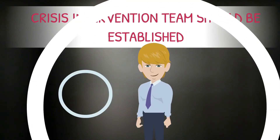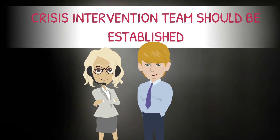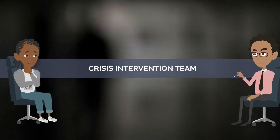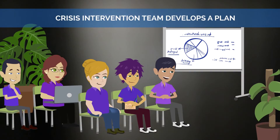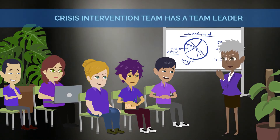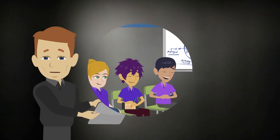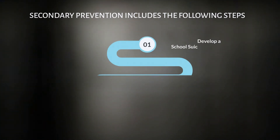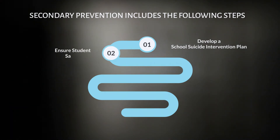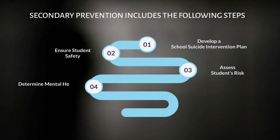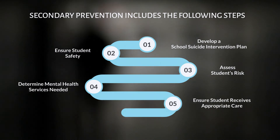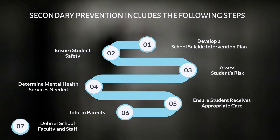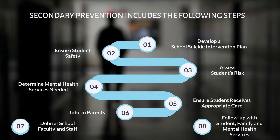A crisis intervention team should be established to lead all steps. The crisis intervention team should consist of a diverse array of school professionals who are all fully interested and invested in prevention. The crisis intervention team develops the intervention plan and should have a team leader oversee the situation and all appropriate actions. Secondary prevention intervention includes the following steps: develop a school suicide intervention plan, ensure student safety, assess student's risk, determine mental health services needed, ensure student receives the appropriate care, inform parents, debrief school faculty and staff, and follow up with the student, family, and mental health services.